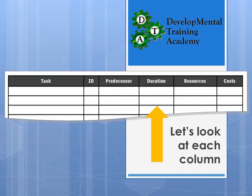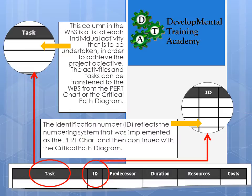You'll see that there are six columns. There's Task ID, which is the ID number we developed when we did our critical path; the Predecessor, which is the task directly before; Duration; Resources; and Costs. Let's look at each one of them.